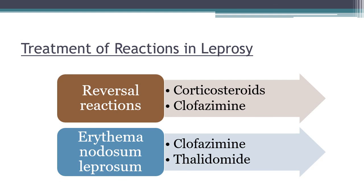There are two types of leprosy reactions. Reversal reaction is a delayed hypersensitivity to M. leprae antigens occurring in tuberculoid leprosy, with cutaneous ulceration and nerve involvement — treated with corticosteroids and clofazimine. Erythema nodosum leprosum (ENL, or lepra reaction) occurs due to release of antigens from killed bacilli during therapy; it presents with tender nodules and high-grade fever and is treated with clofazimine, thalidomide, or corticosteroids. Note: thalidomide is not given in reversal reaction.